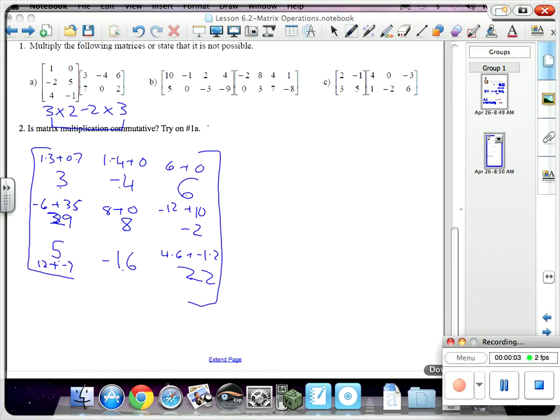So looking at this, the dimensions of this one are two rows, two by four, right? And this would be another two by four. The interior dimensions do not match, right? So we cannot multiply.